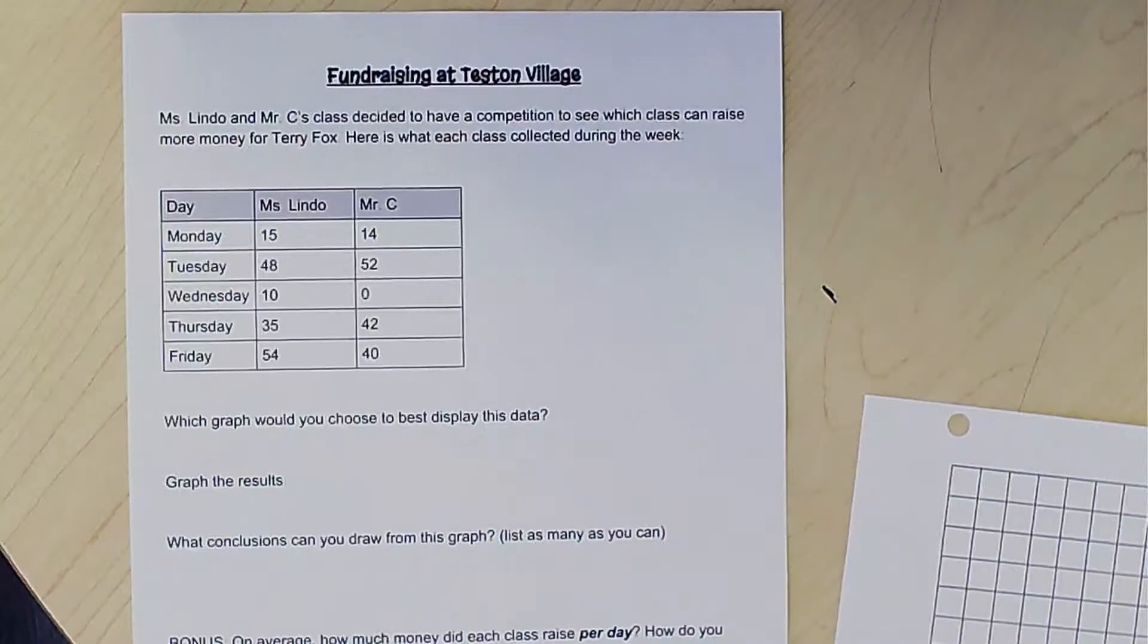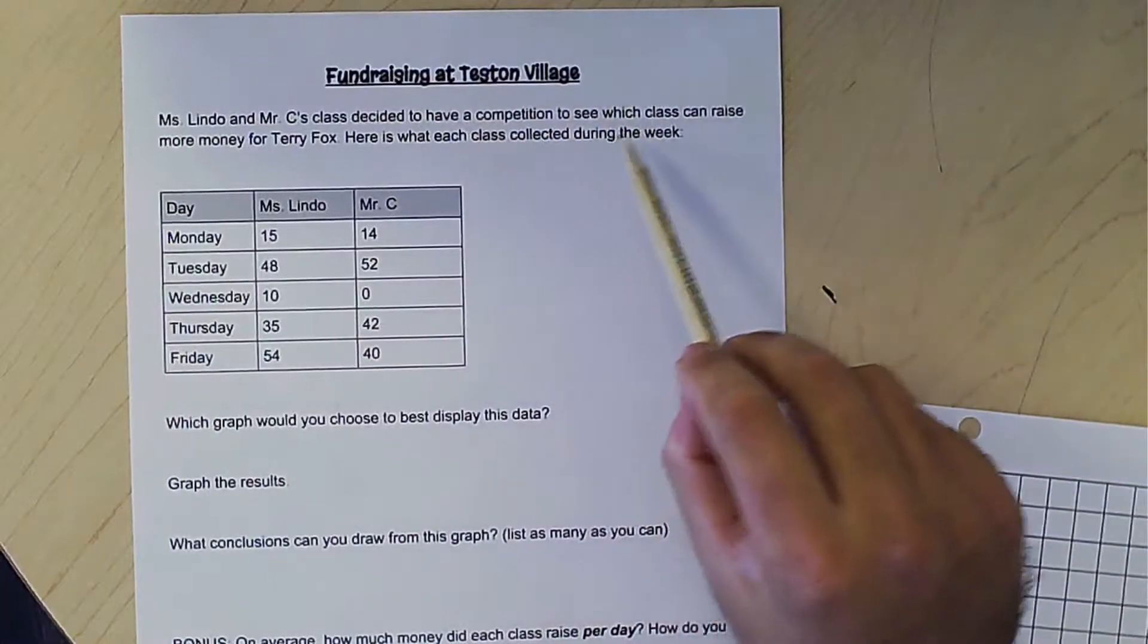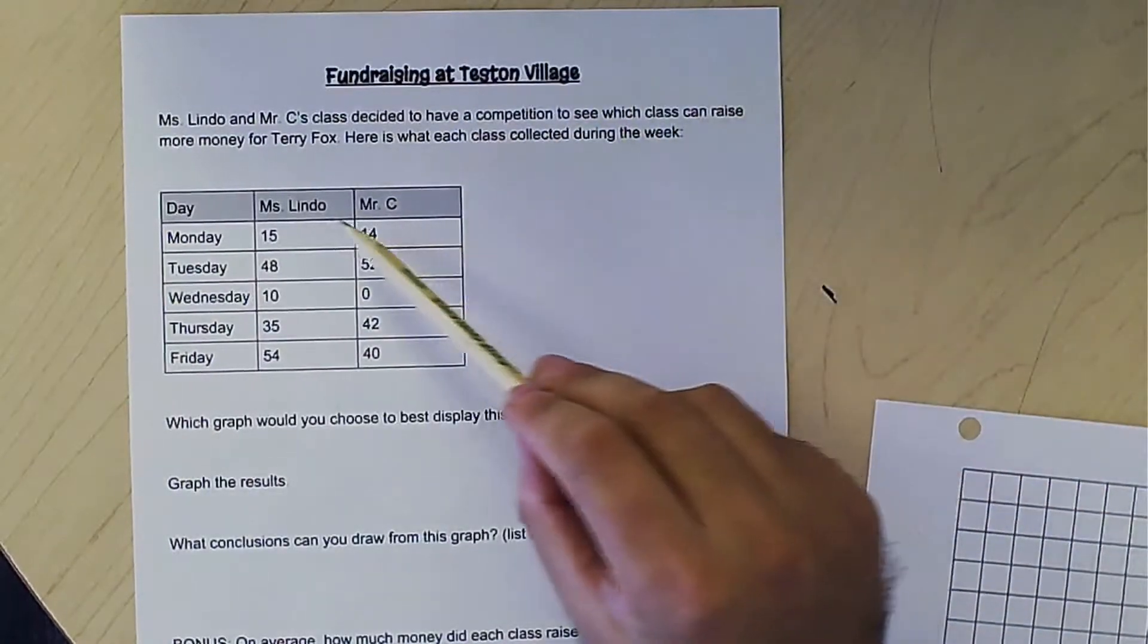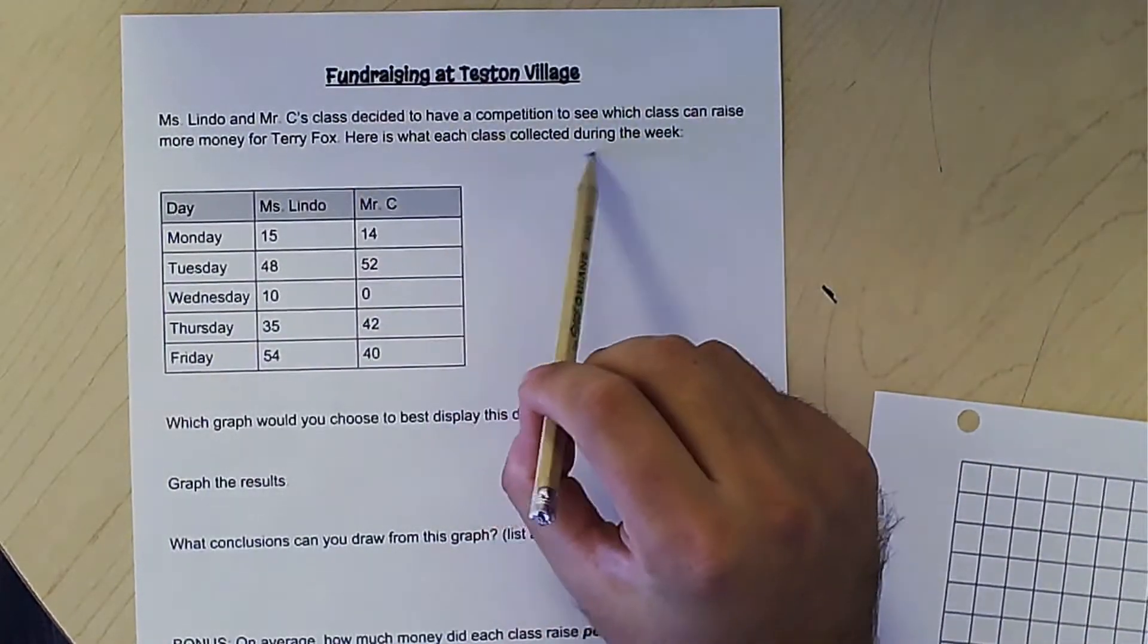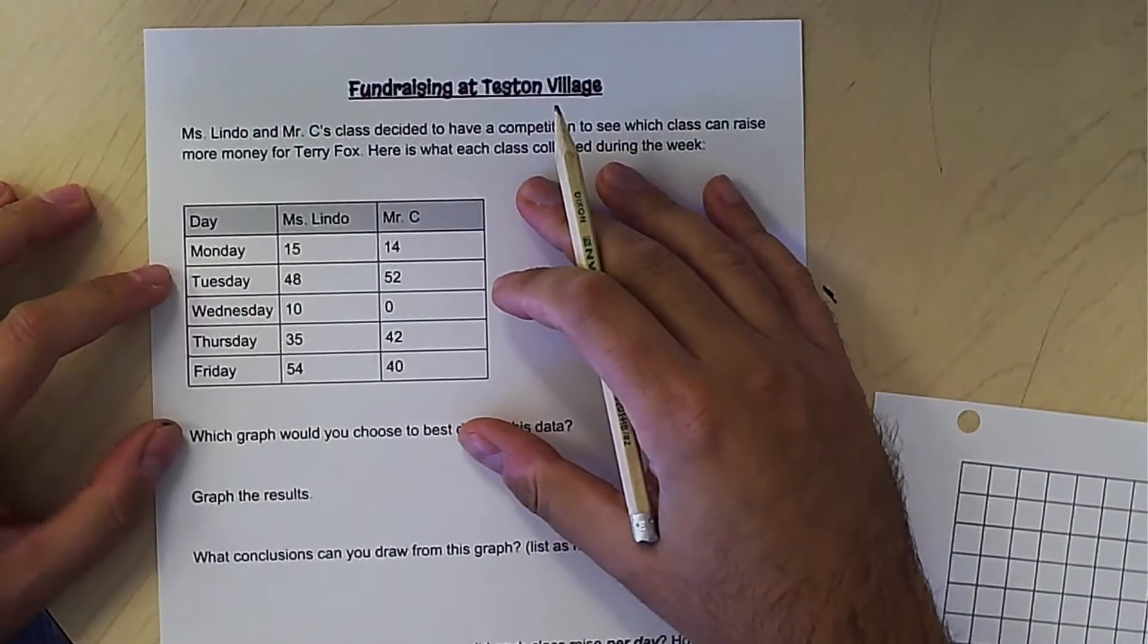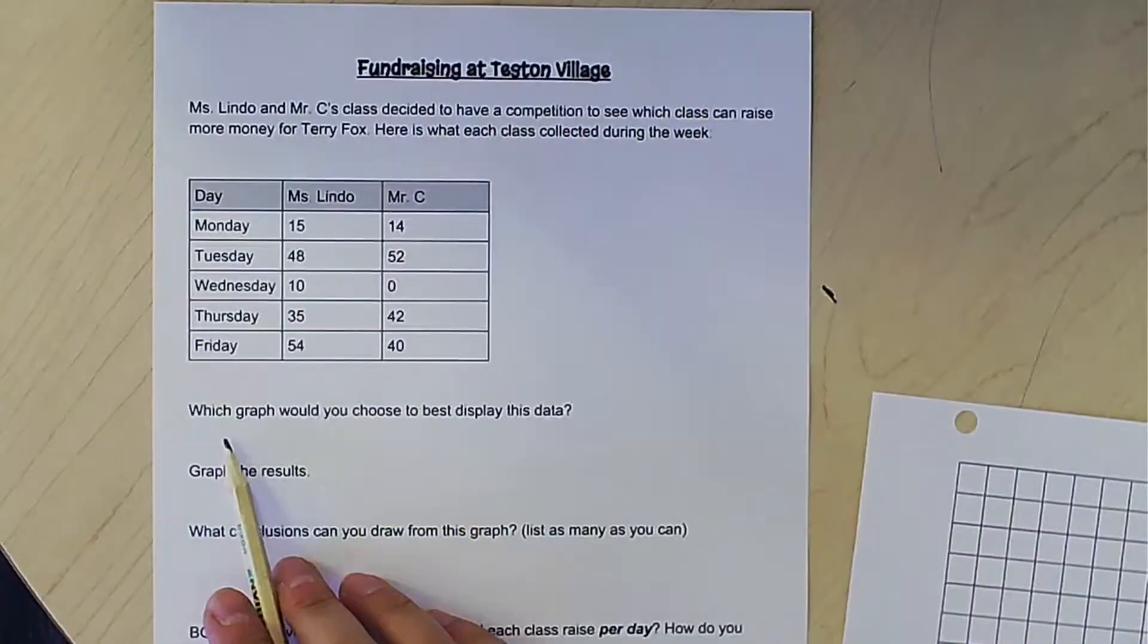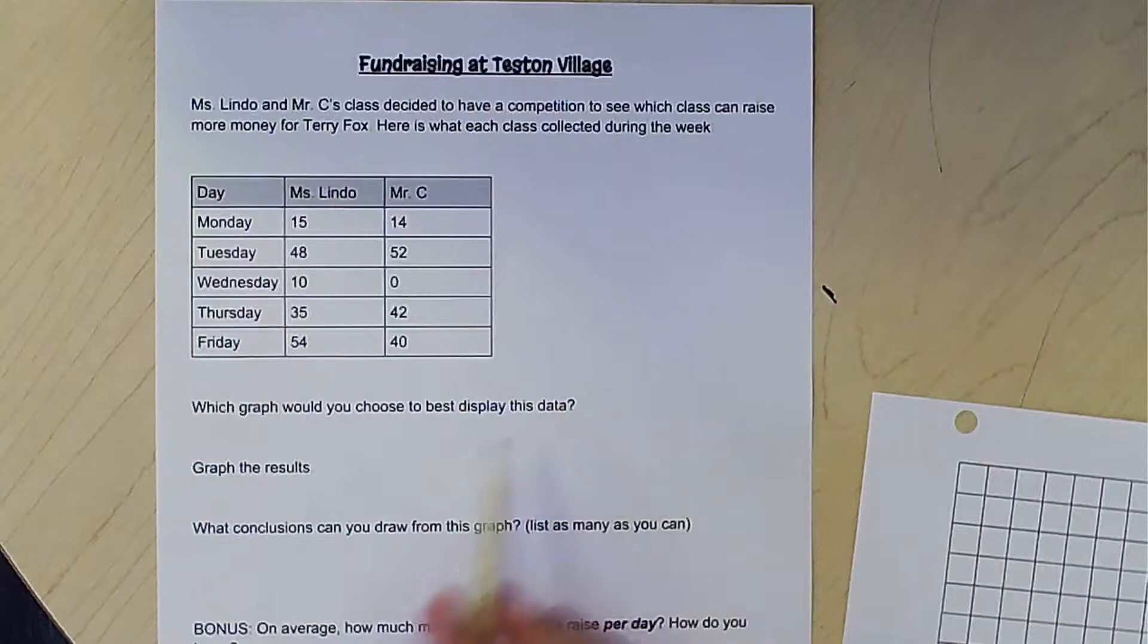Okay, so last week we looked at fundraising at Tesson Village. The question says Ms. Lindo and Mr. C's class decided to have a competition to see which class can raise more money for Terry Fox. Here is what each class collected during the week. So here's a little chart with the five days of the week and the money collected. Which graph would you choose to best display this data?